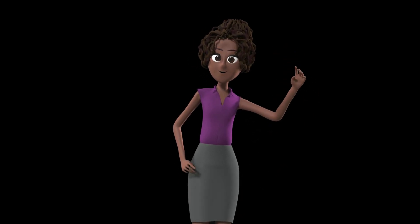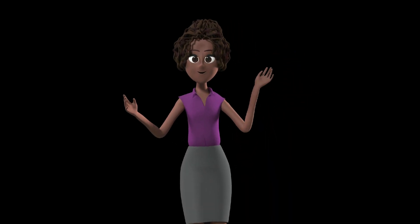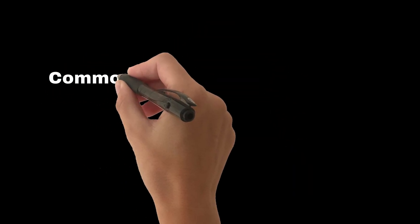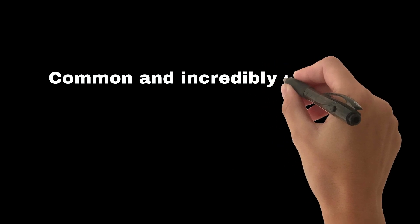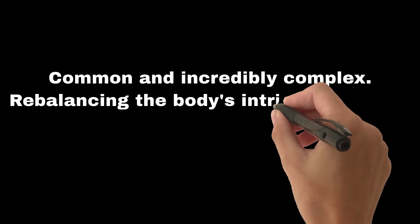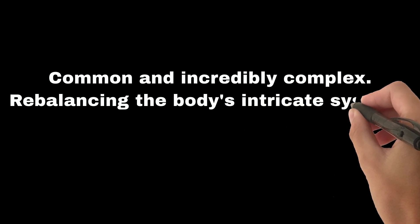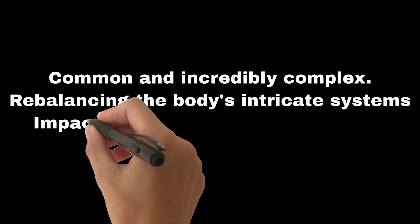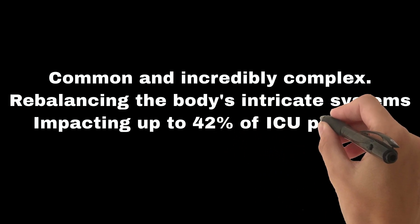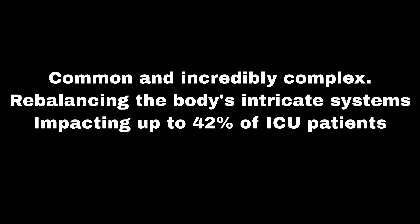Welcome everyone. Today, we're tackling the enigma of acute metabolic acidosis, a hidden adversary in the ICU. It's surprisingly common and incredibly complex to outmaneuver this silent foe by rebalancing the body's intricate systems. They face a labyrinth of low pH and bicarbonate, impacting up to 42% of ICU warriors.